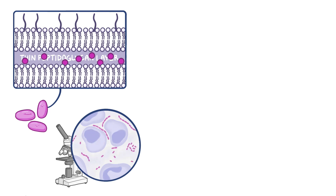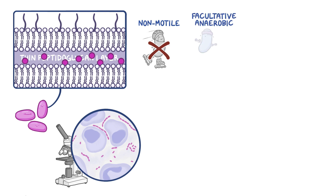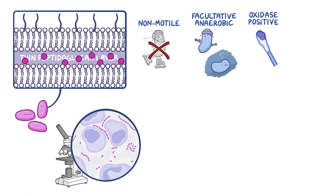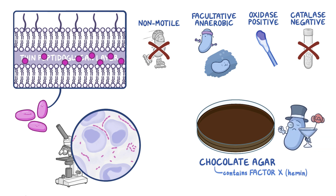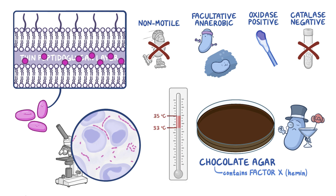The bacteria usually grow in chains, so they're sometimes compared to a school of fish. Haemophilus ducreyi is non-motile, facultatively anaerobic — meaning it can survive in both aerobic and anaerobic environments — oxidase positive, meaning it produces an enzyme called oxidase, and catalase negative. It can be cultivated on chocolate agar, which contains essential nutrients like Factor X (hemin). It's fastidious, growing only in a CO2 environment at 33–35°C, forming small gray or translucent colonies.